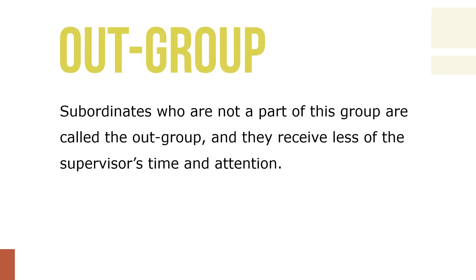Subordinates who are not part of this group are called the out-group because they receive less of the supervisor's time and attention. Members of the out-group are likely to be assigned the more mundane tasks of the group and might not be in the loop insofar as information that's being shared. They may also receive fewer rewards and overall weaker support from the leader.